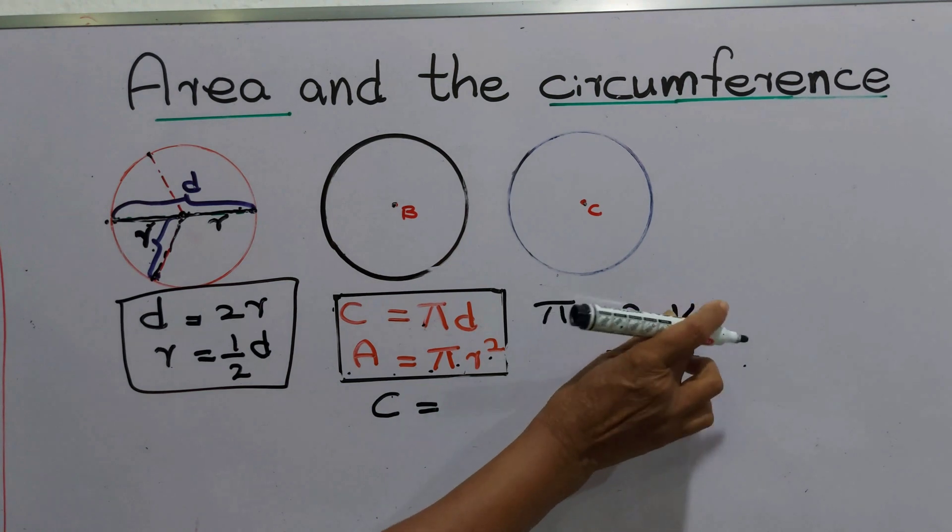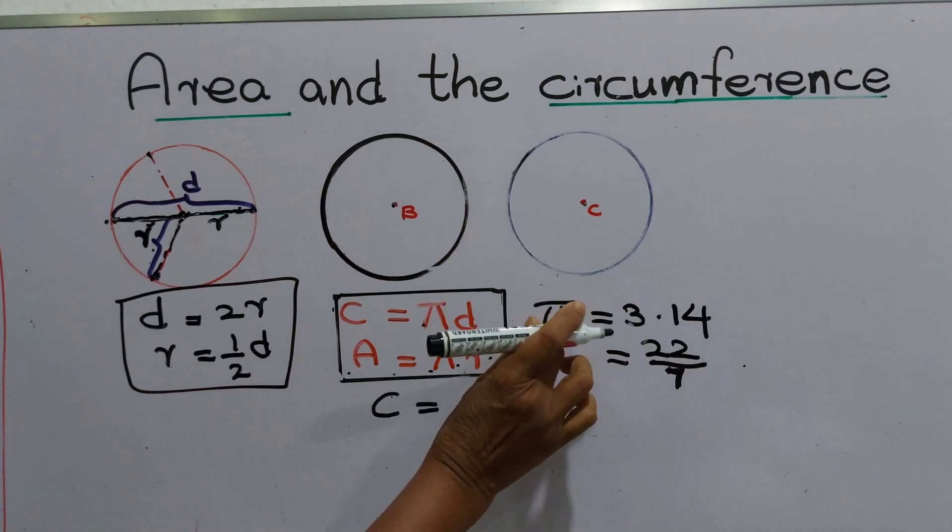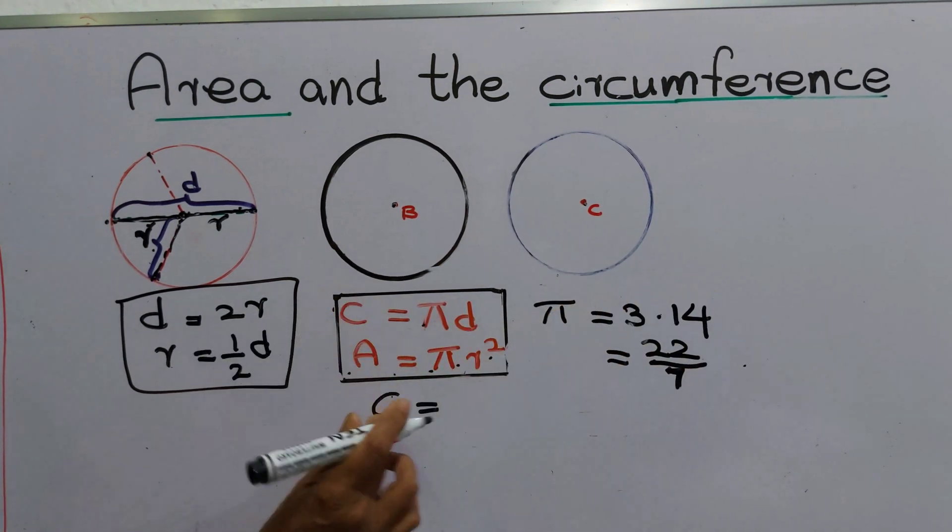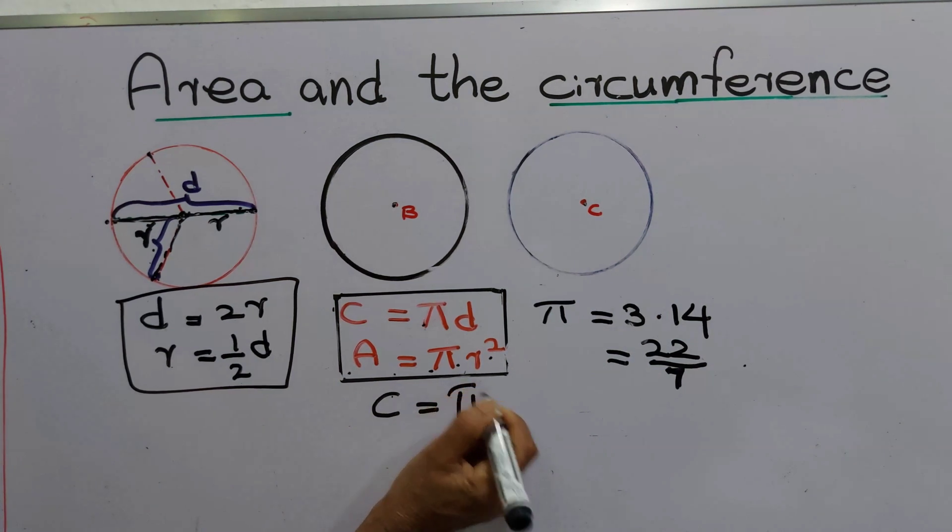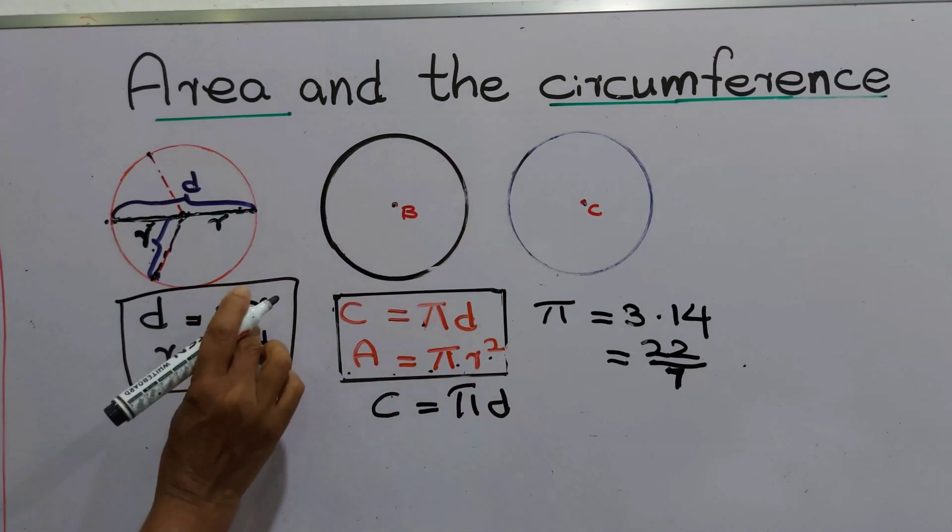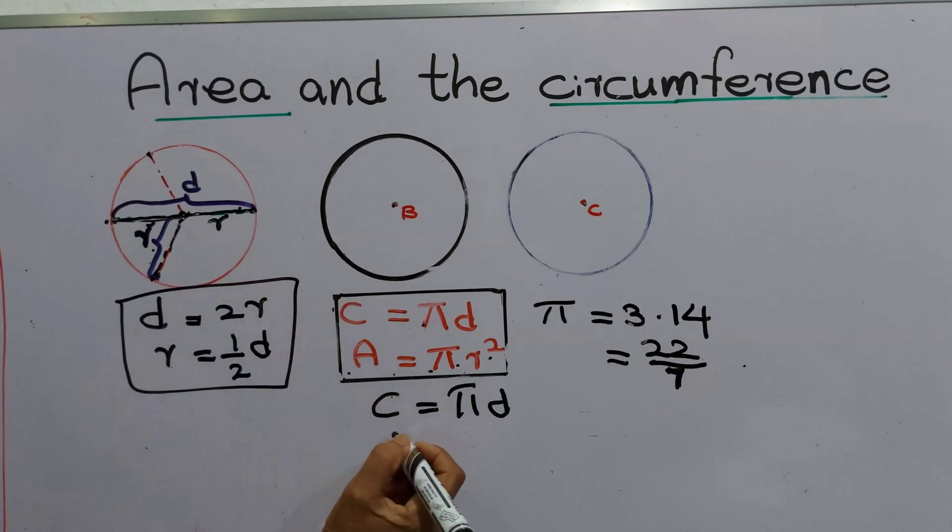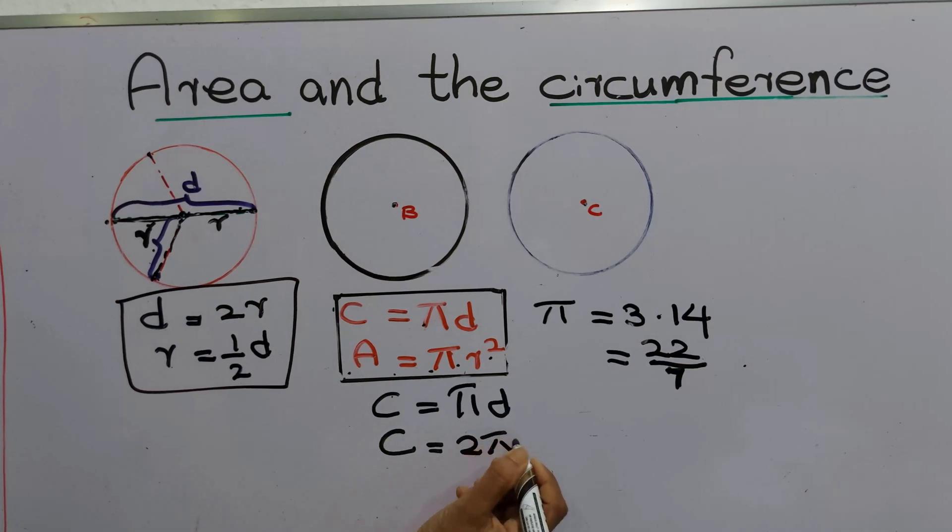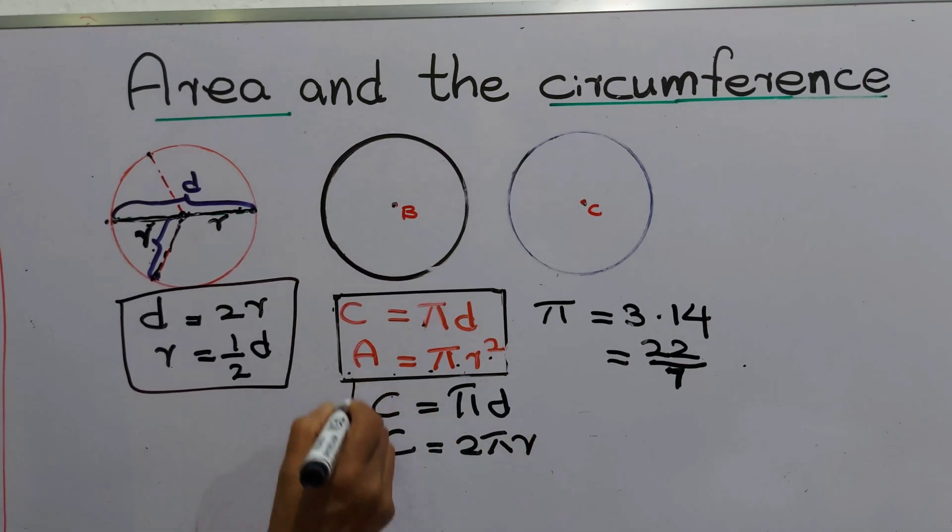This is the value of π. Then circumference equals πd. D means 2r, twice the radius. We can write C as 2πr also. This is the two ways we can find the circumference.